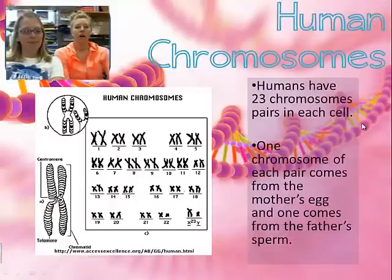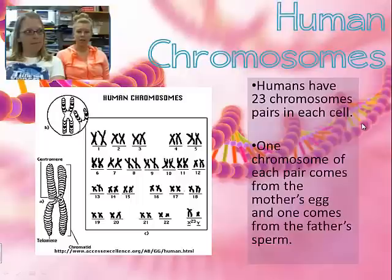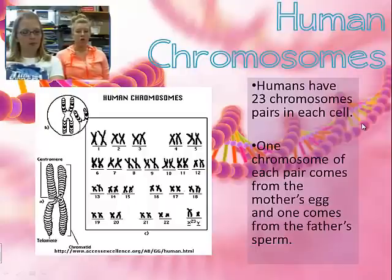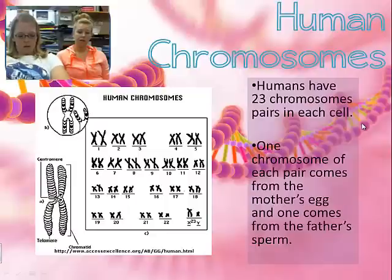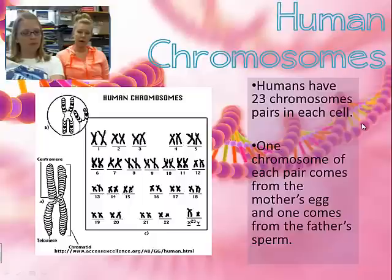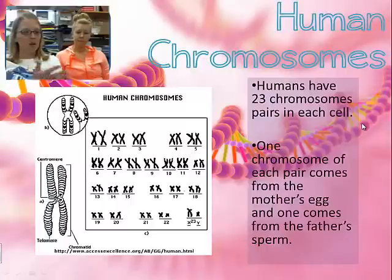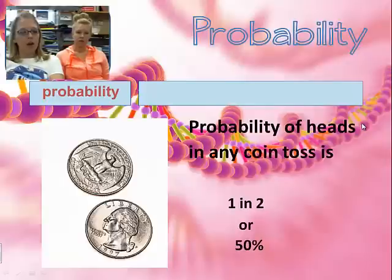As a human being, you have 23 pairs of chromosomes. Not all living things have the same number of pairs, but we're humans so we have 23 pairs in every single one of your cells. You get one chromosome for each pair from each parent — one from your mom and one from your dad — which is why you always have a pair. A pair is two, and two times 23 equals 46, so humans should have 46 chromosomes.